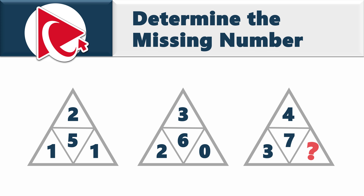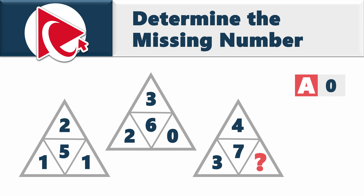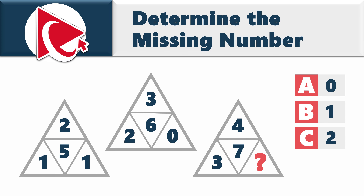And then comes the missing number, which you need to select out of four possible choices. Choice A: zero. Choice B: one. Choice C: two. And last but not least, choice D: three.